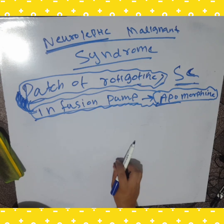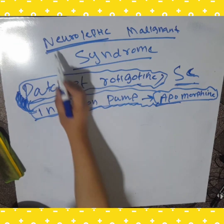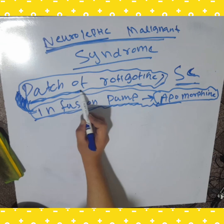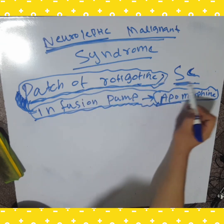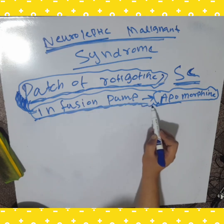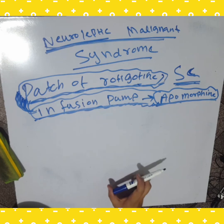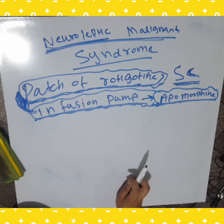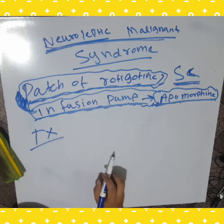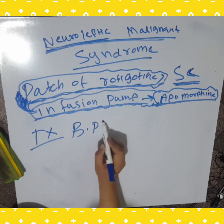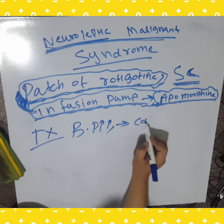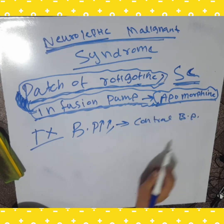These are given to reverse the causes, because they can cause renal failure, hyperthermia, tachycardia, altered mental status, and elevated temperature. For symptomatic treatment, it depends on the situation — if the BP is high, we control the BP with antihypertensive drugs.